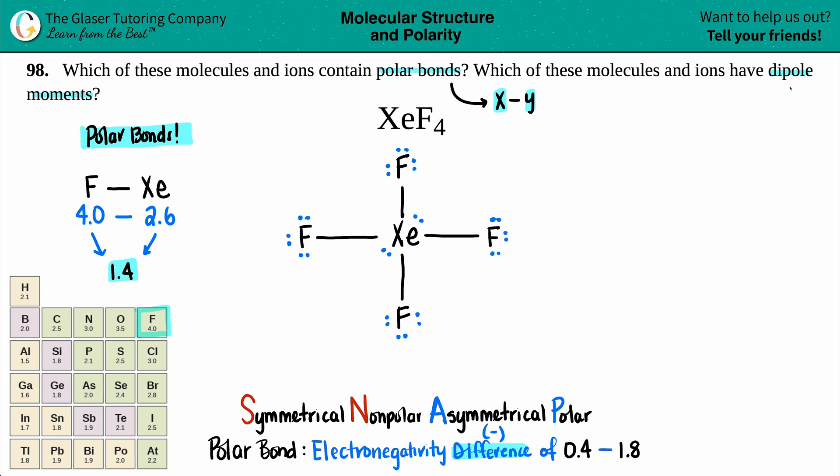Now we want to find out if the whole molecule as a whole has a dipole moment. Dipole moment is just a fancy way for saying that you have a polar molecule. So instead of looking at the individual bonds, we're just looking at this molecule as a whole. And this is where SNAP comes into play, S-N-A-P. If your molecule is completely symmetrical, it is nonpolar. But if you have some type of asymmetry where something is off, that is a polar molecule. And then you would have a dipole moment.